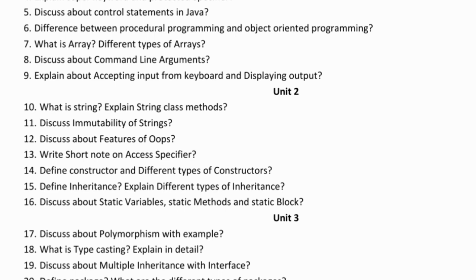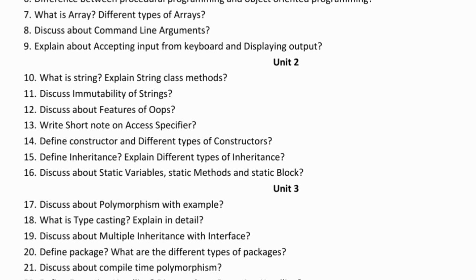Thirteenth question: write a short note on access specifiers. There are four types of access specifiers: public, private, protected, and default. Fourteenth question: define constructor and the different types of constructors — parameterized constructors and default constructors.